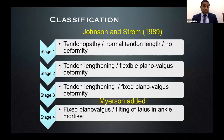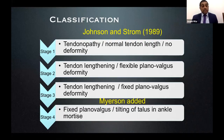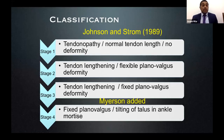The classification of tibialis posterior tendinopathy and dysfunction is by Johnson and Strom — a prognostic classification that guides treatment decisions. It runs from stage one to three originally, with stage four added by Myerson. Stage one is tendinopathy with normal tendon length and no deformity. Stage two has lengthening with a flexible deformity. Stage three has a fixed deformity. Stage four sees the deformity progress, causing tilting of the talus within the ankle mortise — moving from plantar valgus into the ankle.